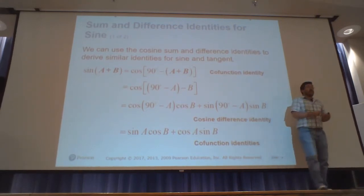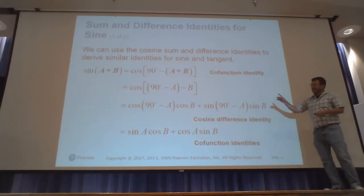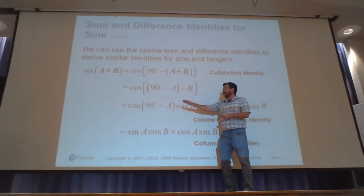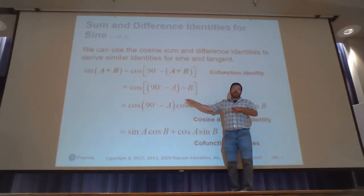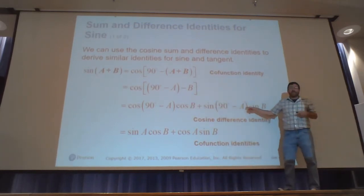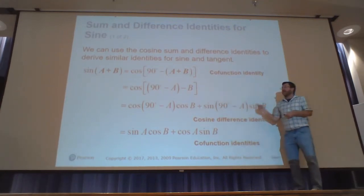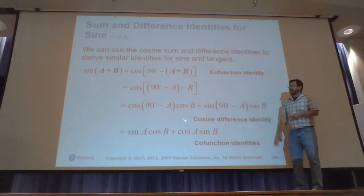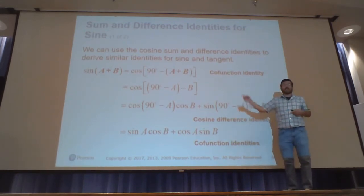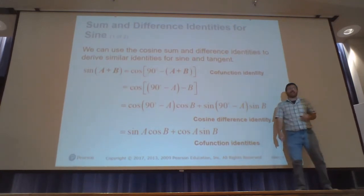Note the difference between the sine and cosine identities. For cosine of A minus B, cosine terms are grouped together and sine terms are grouped together, with the middle sign being opposite. For sine of A plus B, it's sine of the first times cosine of the second, plus cosine of the first times sine of the second — and the sign in between matches: plus here, plus in the result.